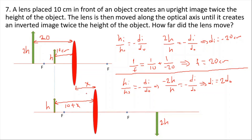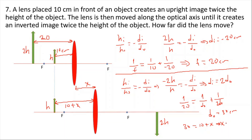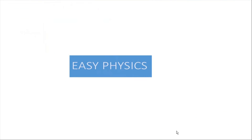With focal length 20 and d_image = 2 × d_object: 1/20 = 1/d_object + 1/(2 × d_object). After calculations, d_object equals 30 centimeters. Since 30 = 10 + x, the lens moved x = 20 centimeters.